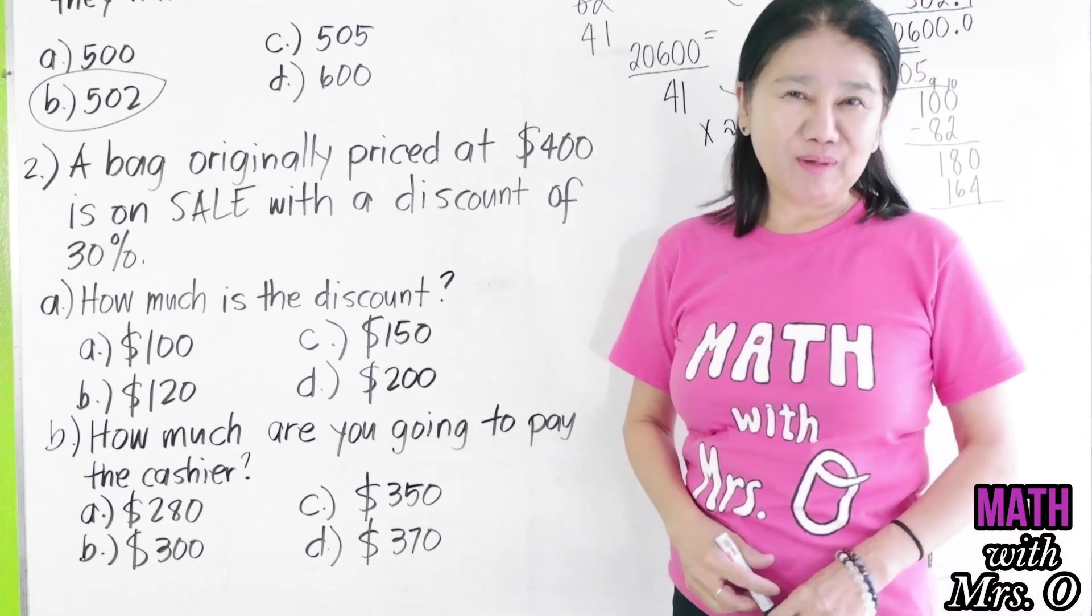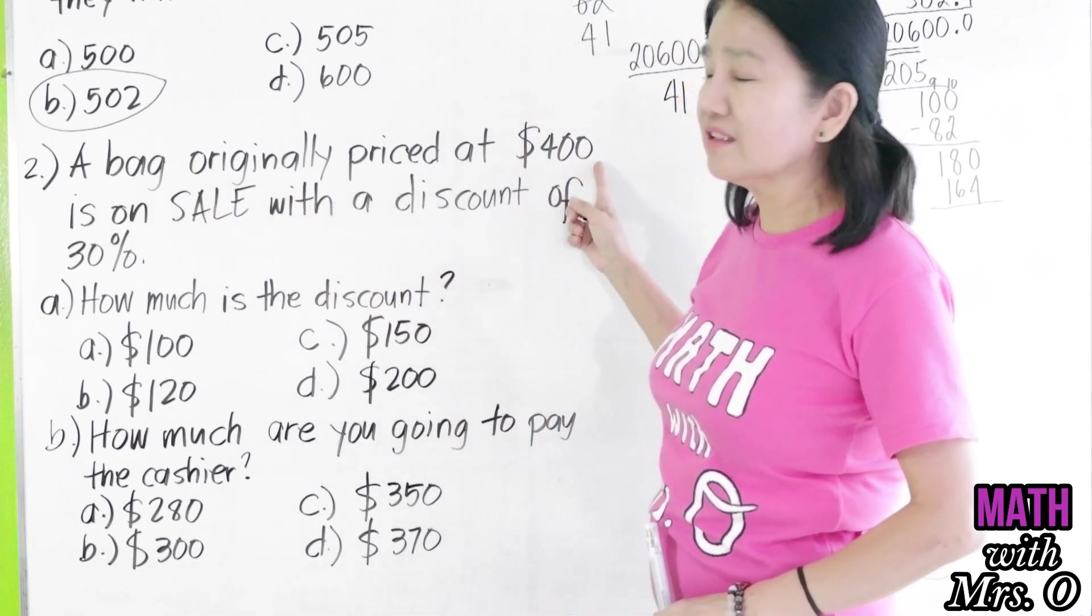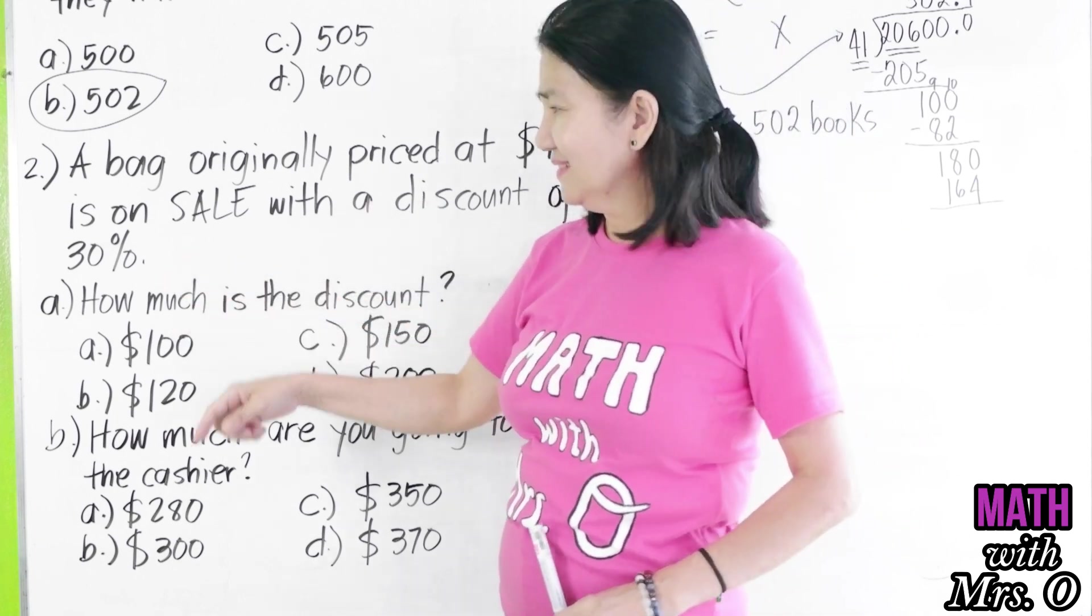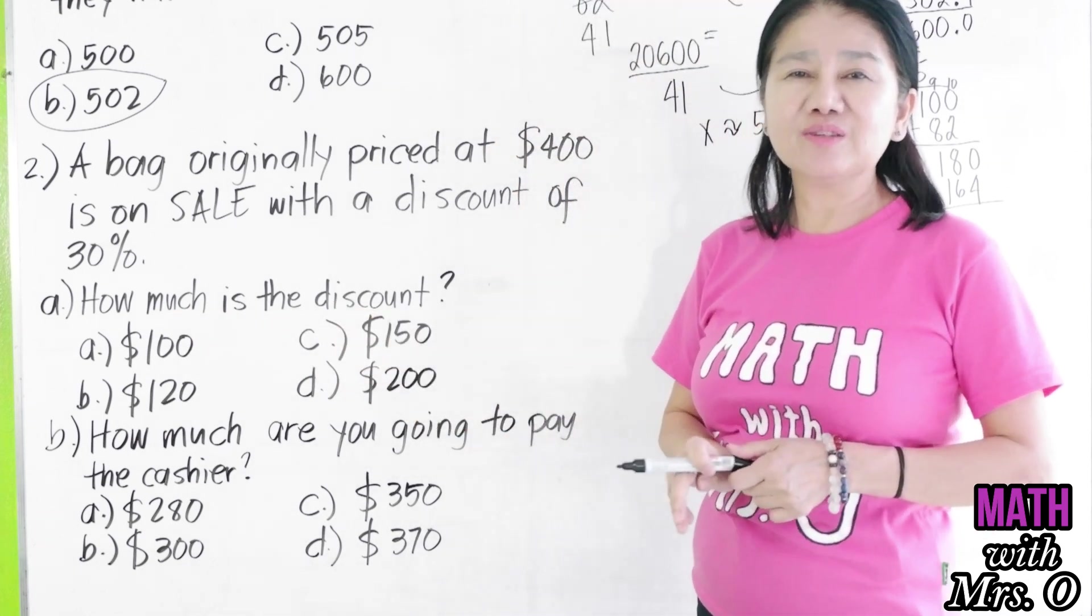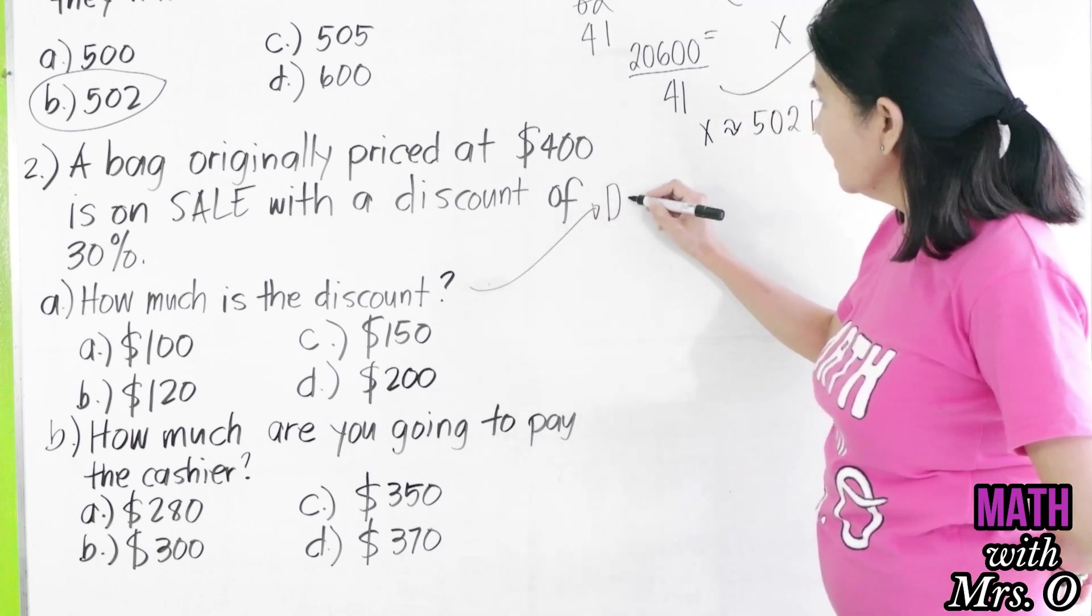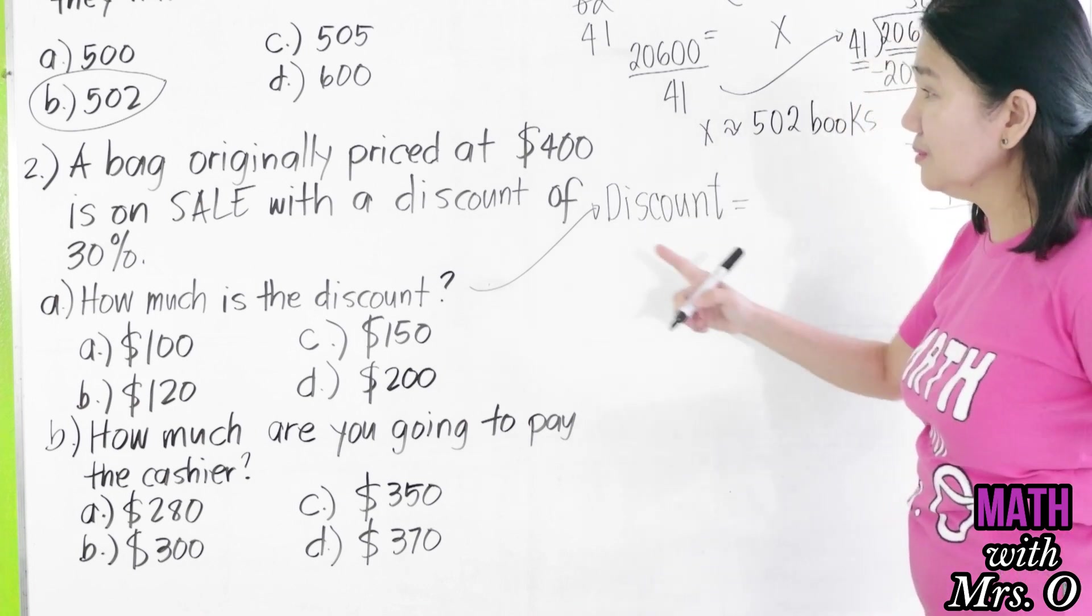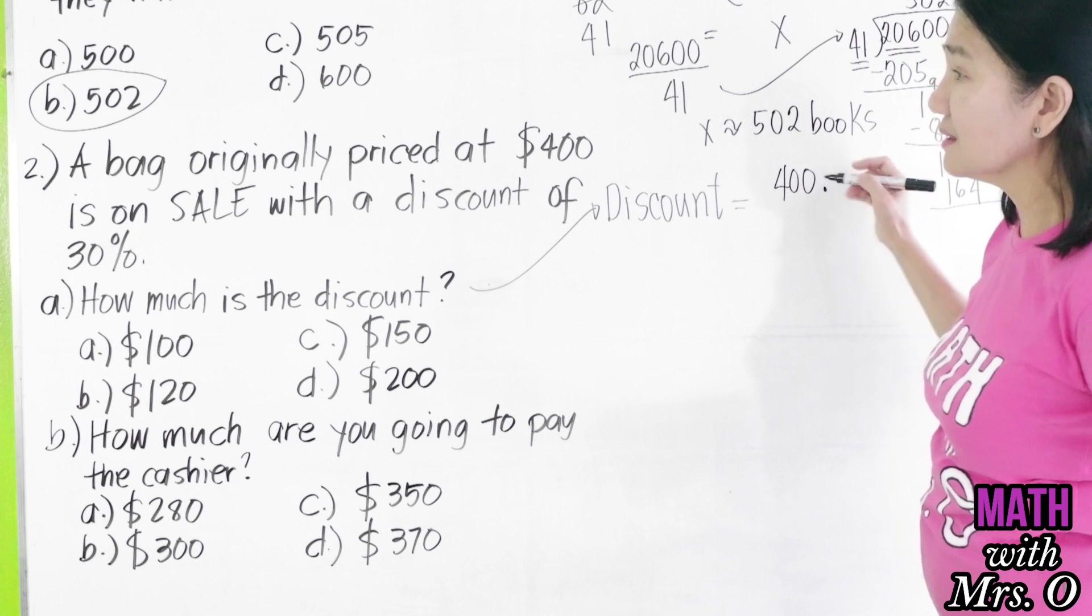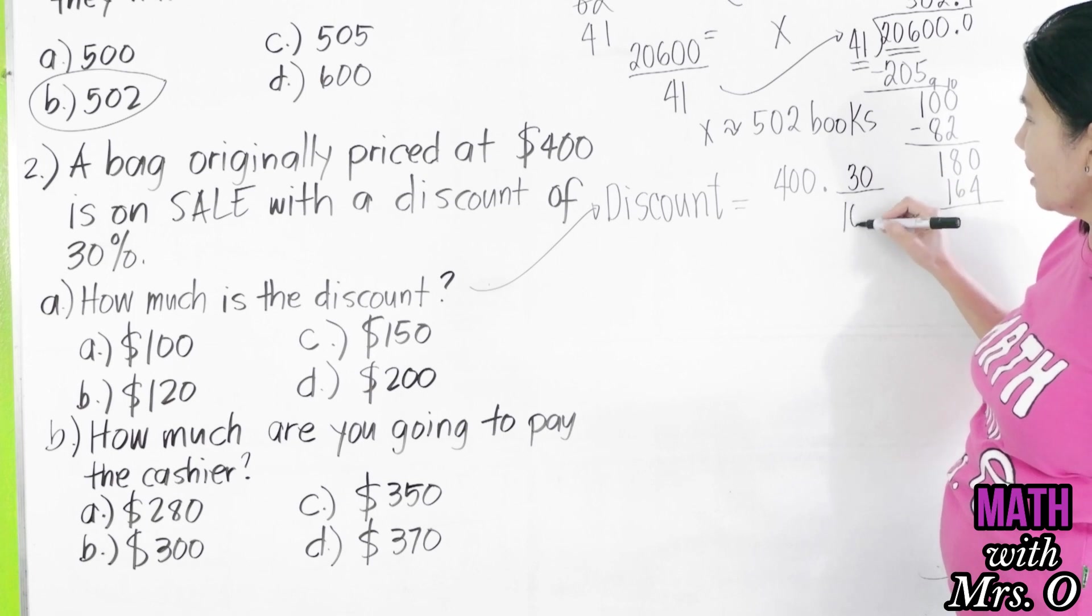Let's move on to problem number two. A bag originally priced at $400 is on sale with a discount of 30%. How much is the discount? So, in this problem, there are two ways of solving it. The first one is the discount is equal to the price, $400, times the discount, which is 30%. And 30% is 30 per 100.